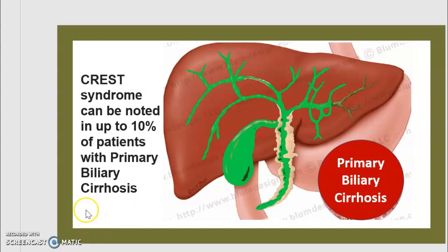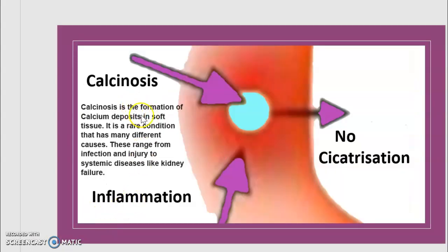Let's deal with the five symptoms one by one. First, calcinosis. Calcinosis is the formation of calcium deposits in soft tissue. It is a rare condition that has many different causes, ranging from infection and injury to systemic diseases like kidney failure.